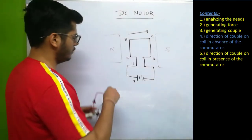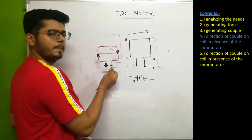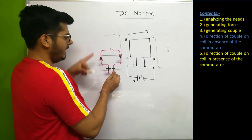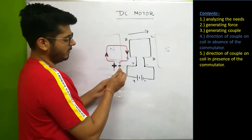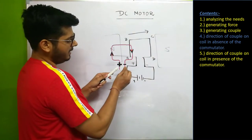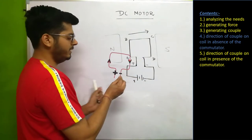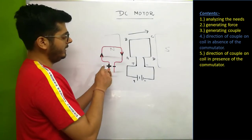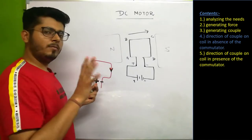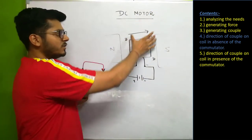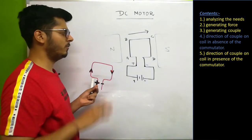Let's look at this coil in this picture. The AB arm is connected with the positive terminal, and the CD arm is near the negative terminal. So current flows from positive to negative direction. Now we have to see: what is the direction of couple that acts on the body? Let's take the first case of the coil and then after 180 degrees of rotation, the second case.